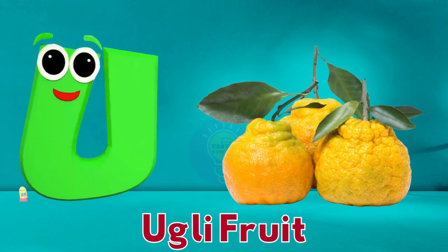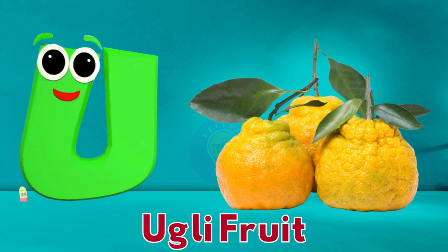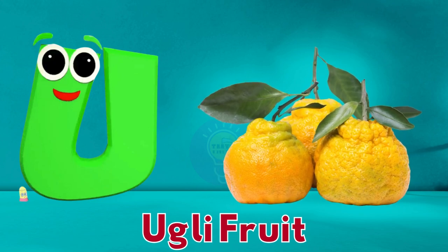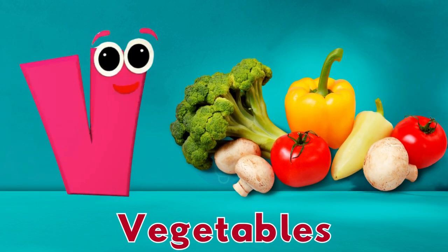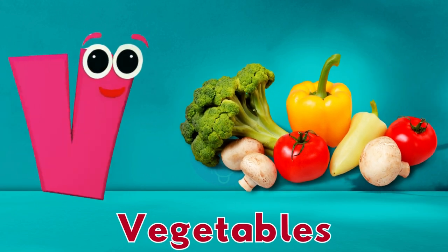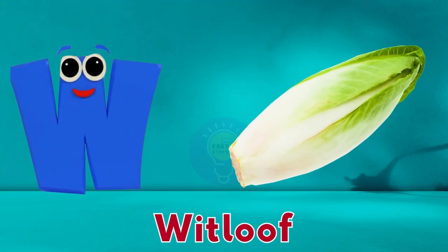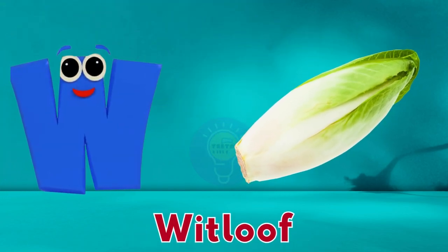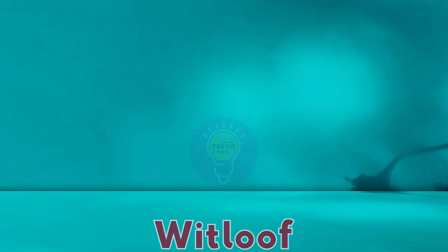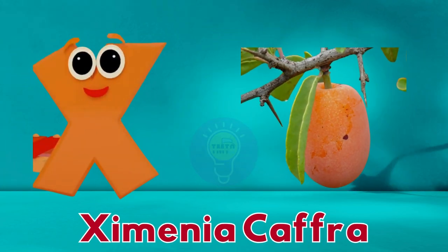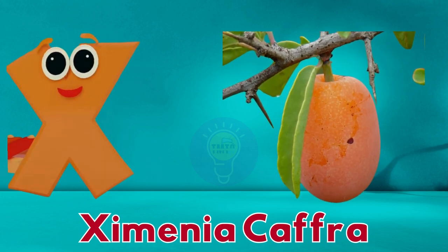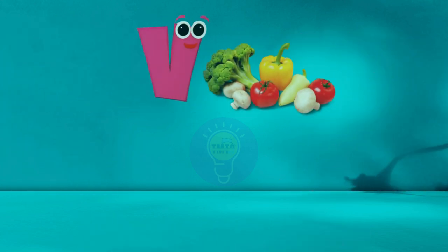U is for ugly fruit, ugly fruit. V is for vegetables, vegetables. W is for witloof, witloof. X is for ximenia, ximenia.